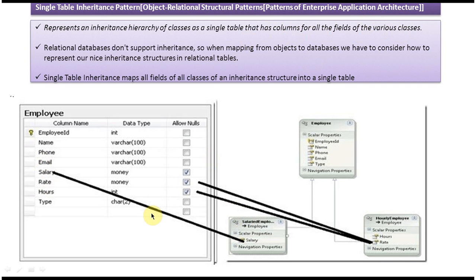What we are doing is representing the entire hierarchy of classes in a single table — only one table is used. The second point is that relational databases don't support inheritance, so this pattern provides a way to handle it. The third point is that Single Table Inheritance maps all fields of all classes of an inheritance structure into a single table. That is about the Single Table Inheritance pattern. Thanks for watching.